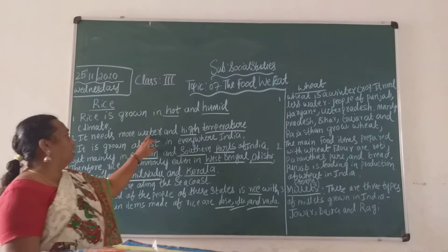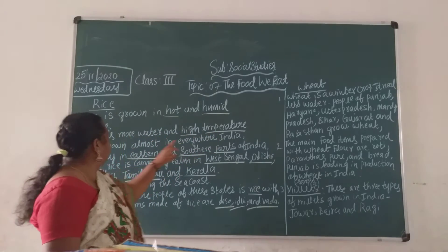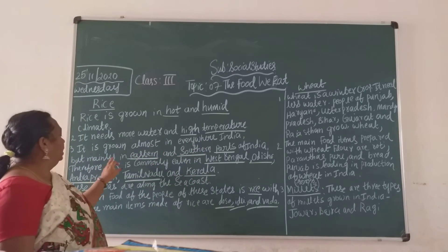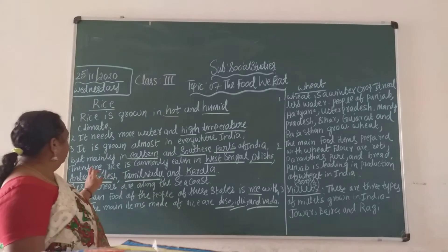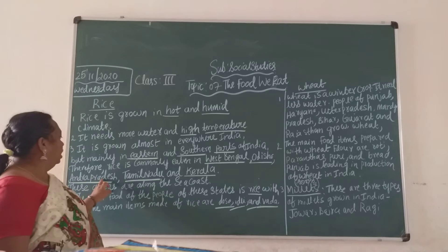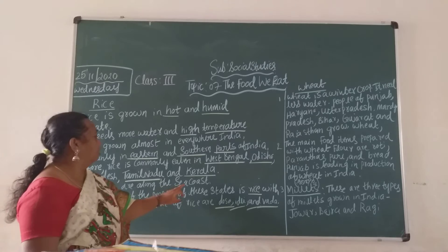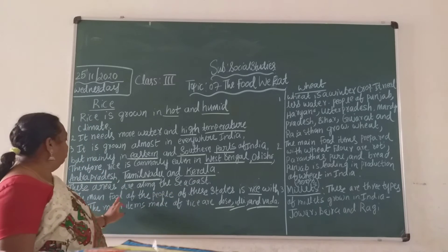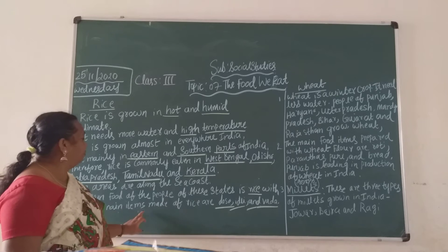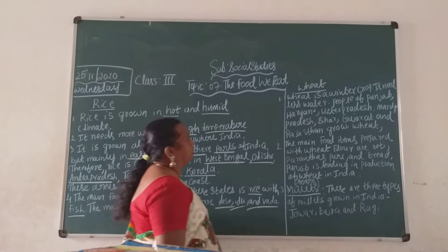It needs more water and high temperature. It is growing almost everywhere in India, but mainly in the eastern and southern parts of India. Therefore, rice is commonly eaten in West Bengal, Odisha, Andhra Pradesh, Tamil Nadu and Kerala. These areas are along the sea coast. The main food of the people of these states is rice with fish. The main items made of rice are dosa, idli and vada.